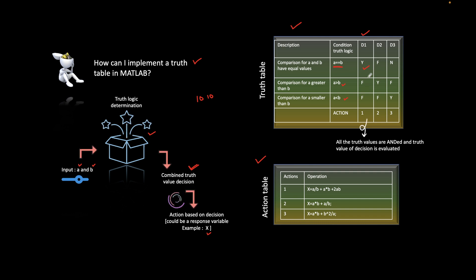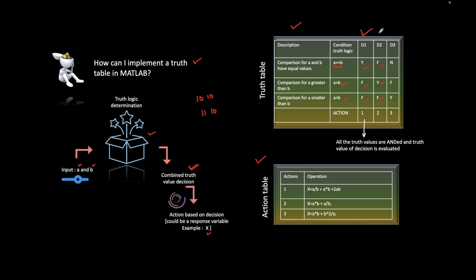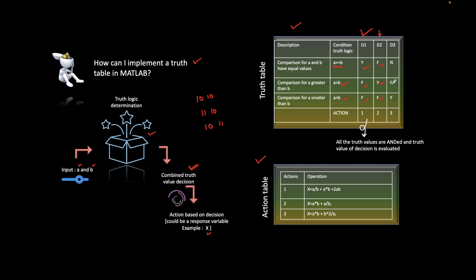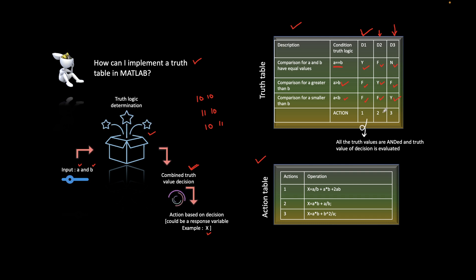For example, if a = 10 and b = 10, both are the same, so the first condition is true and the remaining are false — decision one is taken. If a = 11 and b = 10, the second condition a > b is true and the rest are false, leading to decision two. If a = 10 and b = 11, the first two conditions are false and the third is true, so decision three is taken.